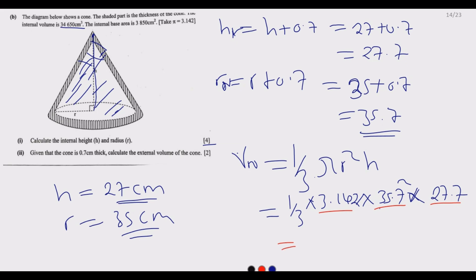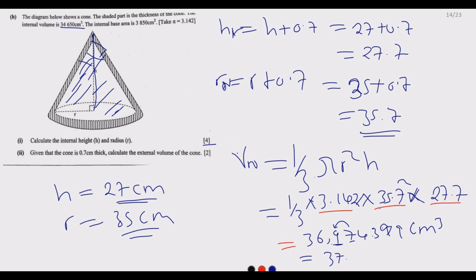Using the calculator, we get 36,974.399 cm³. Rounding to three significant figures as per exam instructions: the digit after 36,900 rounds up because of the 7, giving us 37,000 cm³ as the external volume — the final answer for question 7B.